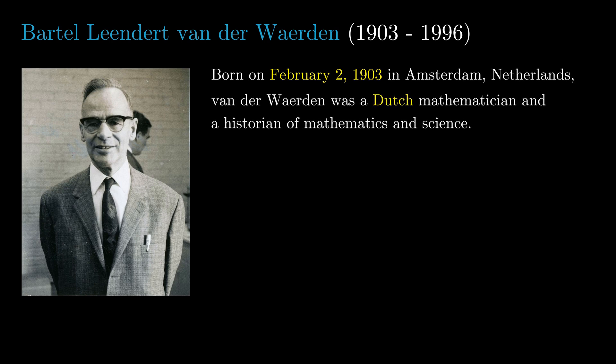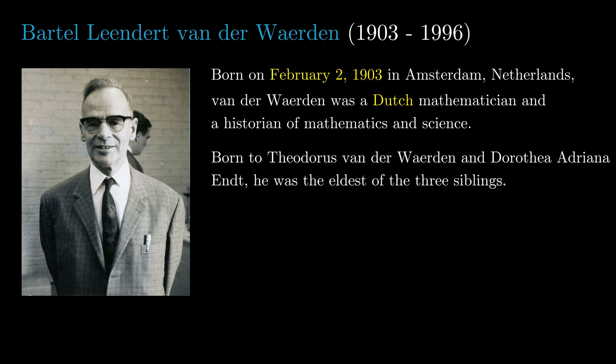Born on February 2nd, 1903 in Amsterdam, van der Waerden's parents were Theodorus and Adriana.